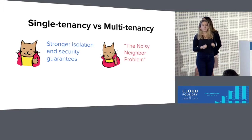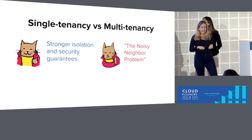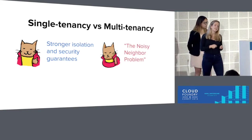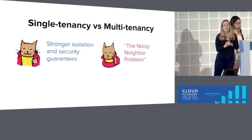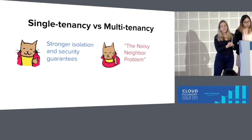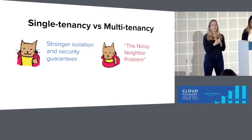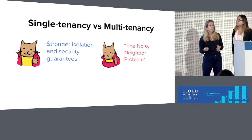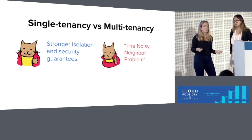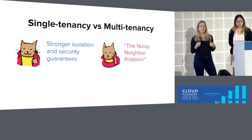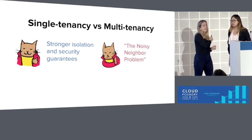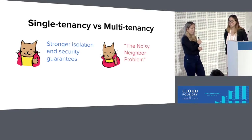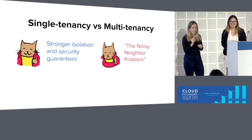One more comment on single tenancy versus multi-tenancy. Single tenancy tends to have stronger isolation and security guarantees, whereas multi-tenancy often suffers from the noisy neighbor problem. When you have more processes running on the VM, if one user is a very heavy RabbitMQ user, they can impact others sharing the same VM.